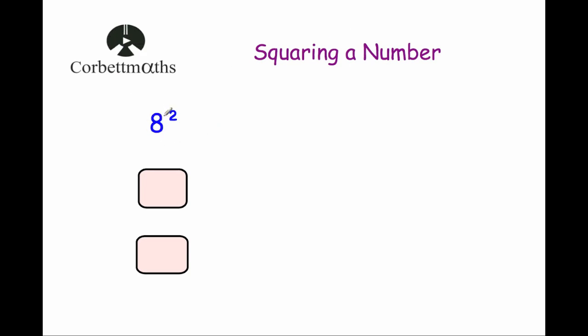Here we have 8 squared. This little 2 is the squared symbol and it means square 8. To square a number you multiply it by itself. So 8 squared means 8 times 8, and 8 times 8 equals 64. Therefore, 8 squared equals 64.